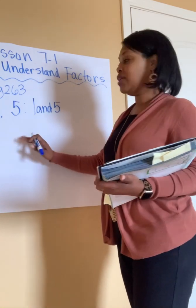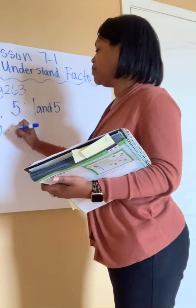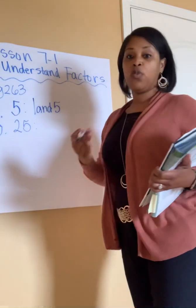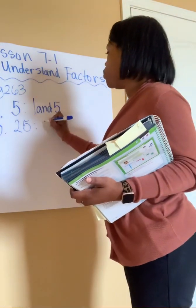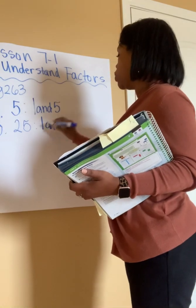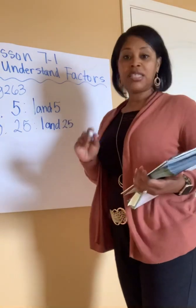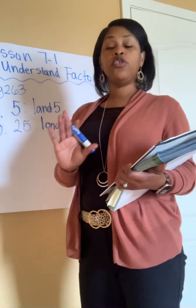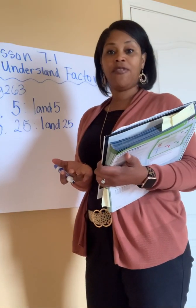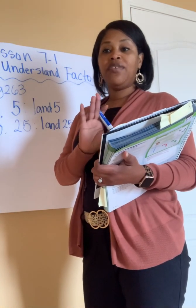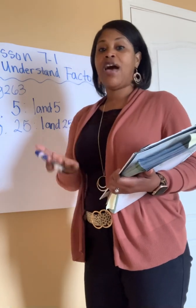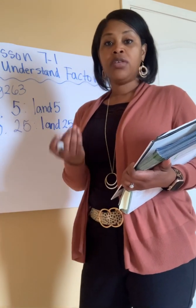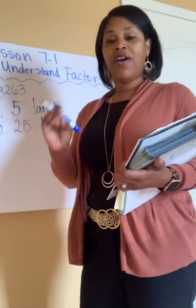Number 10, problem number 10, they're asking you the factor pairs for 25. I always start with 1 and the number. So we know that 1 and 25 is a factor pair for 25. Then I think about, what two numbers can I multiply together to give me 25? Since 25 ends in a 5, that lets me know that 5 times something is 25. 5 times 5 is 25. So the next factor pair will be 5 and 5.